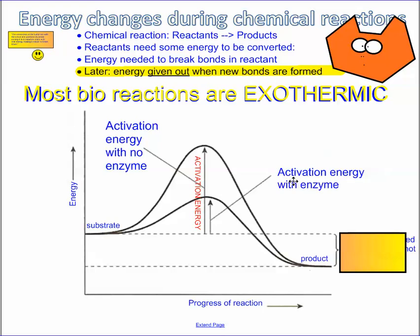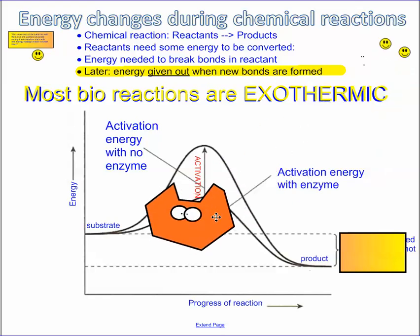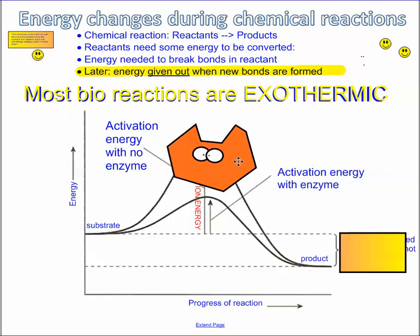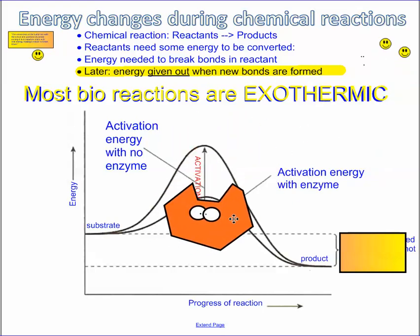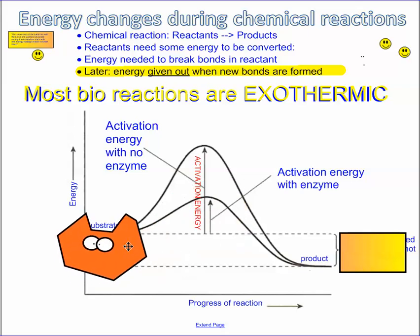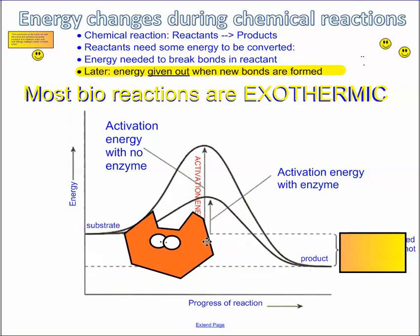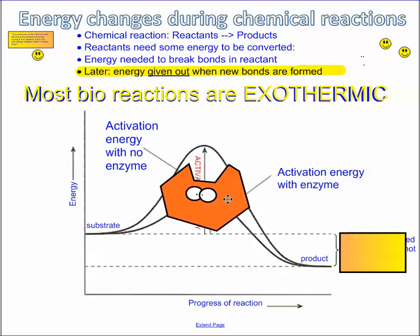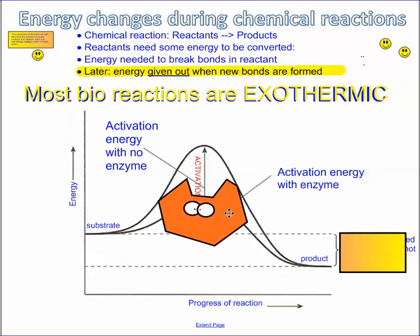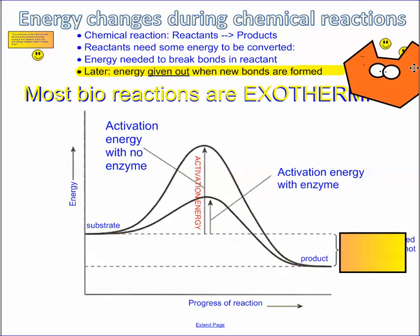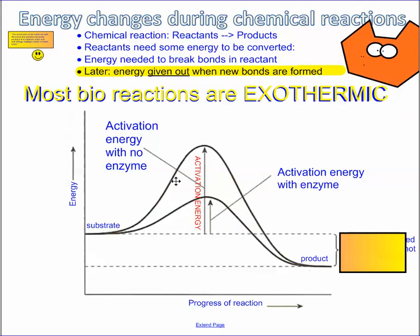In the presence of an enzyme, the enzyme actually helps to lower the activation energy. When the substrate combines with the enzyme, it forms a temporary complex that weakens the bonds and allows the reaction to proceed with less energy than is normally required. So that's the activation energy with the enzyme actually present.